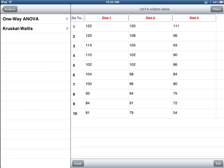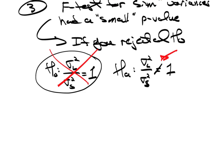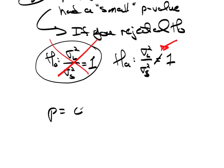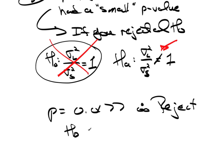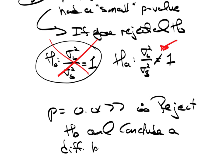Going back to TC Stats, under the many samples menu, select Kruskal-Wallis and select all three groups, then update it. There's your test statistic and there's your p-value. The p-value is 0.0177. Therefore, I would reject the null hypothesis and conclude there is a difference between the groups.